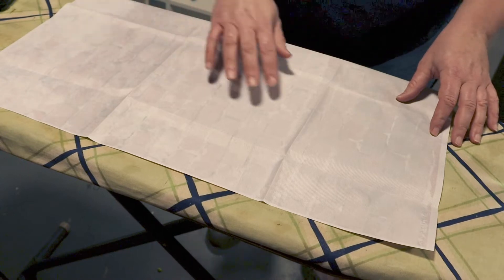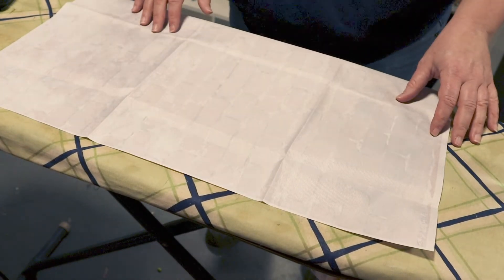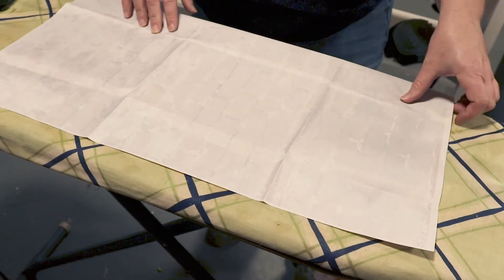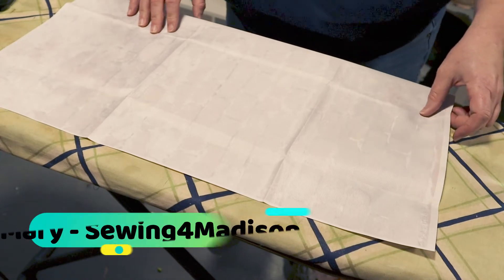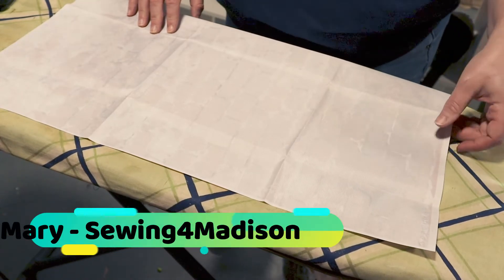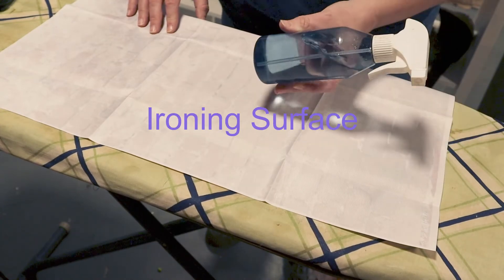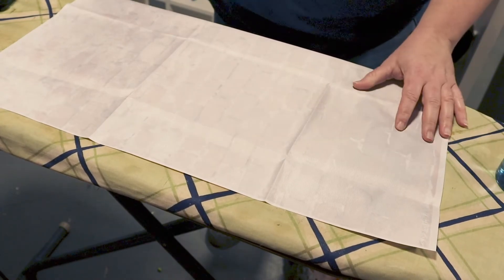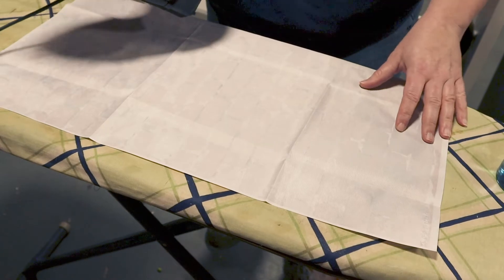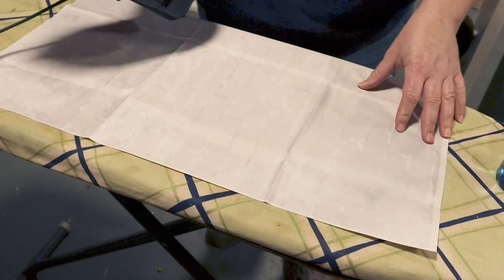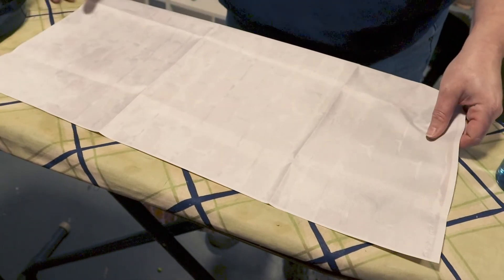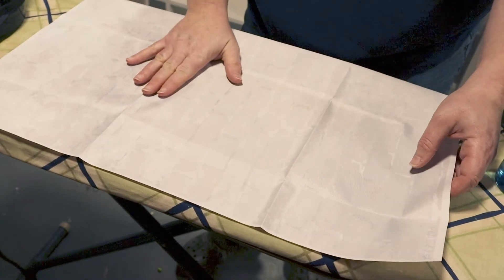Have you ever wanted to know how to easily get the wrinkles out of your photo backdrops? I'm going to show you how quick and easy it can be. You only need a couple things: an ironing surface, a spray bottle of water, and a basic household iron on a low setting.